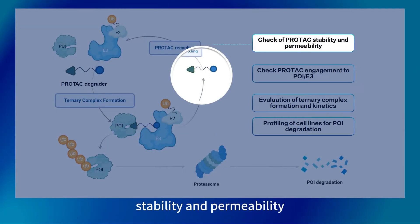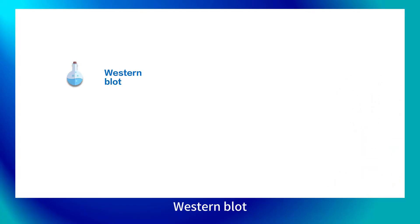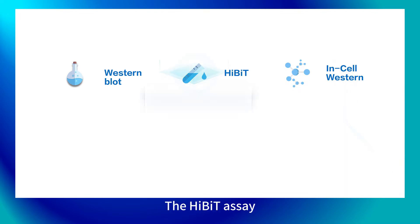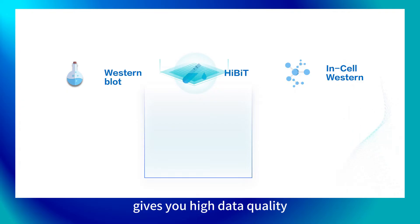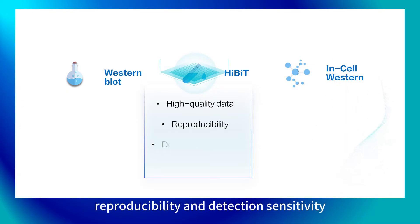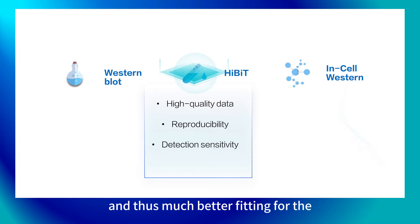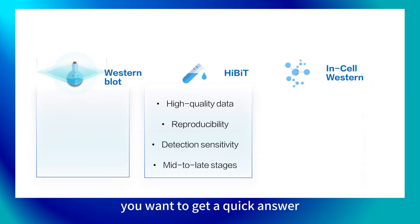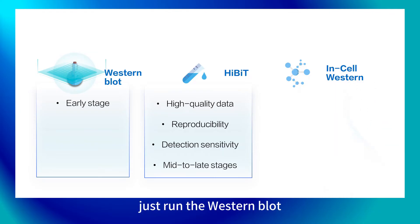The last would be to check the PROTAC stability. Both the Western blot and HiBiT assays can help you assess protein degradation — the potency, Dmax, and DC50. The HiBiT assay gives you high data quality, reproducibility, and detection sensitivity, making it much better suited for late-stage or mid-stage SAR findings. But at a very early stage, if you want a quick answer on whether your PROTACs are working, just run the Western blot, which is quicker to set up.